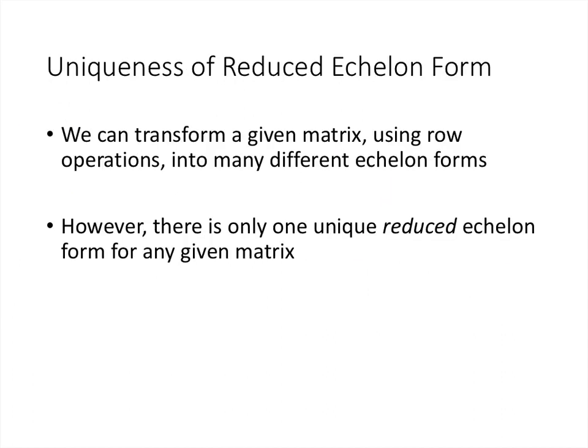It's possible to transform a given matrix using row operations into many different echelon forms — there's no unique echelon form for a matrix. But it turns out there is one unique reduced echelon form for any given matrix. No matter how you get there, if you perform the row operations correctly, you and I working on the same matrix will eventually end up with exactly the same reduced echelon form — the same numbers in the exact same positions. That uniqueness is another advantage of reduced echelon form.